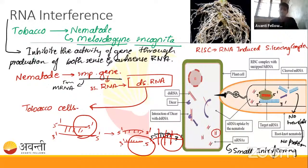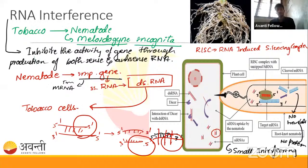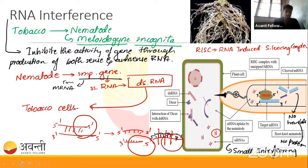The textbook gives RNA interference in one paragraph without much explanation of how it works. That's why I drew diagrams and explained the mechanism in detail. If you haven't understood the concept, let me know in the chat box and I'll repeat it. That covers RNA interference in tobacco plants.